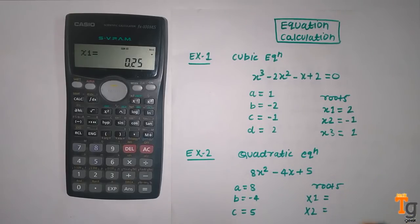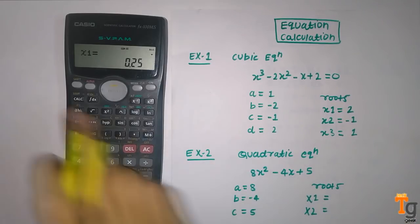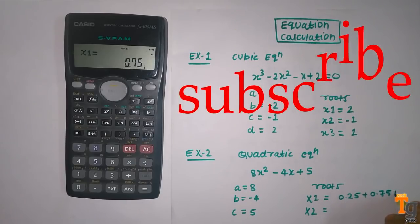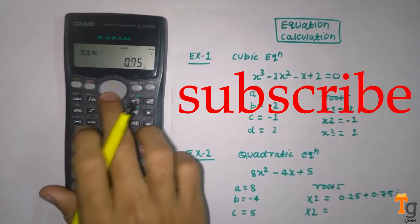If you want to see your imaginary root, you have to press shift and then this button equal. It will give you imaginary roots. So value is 0.25 plus 0.75i number.